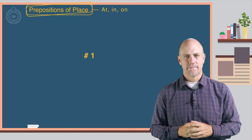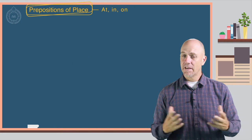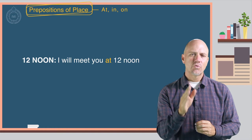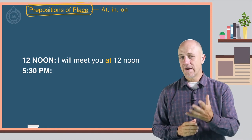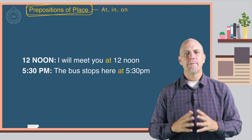Number one, to indicate a specific time. Here are some examples. 12 noon: I will meet you at 12 noon. 5:30 PM: The bus stops here at 5:30 PM.